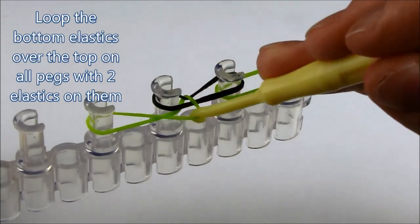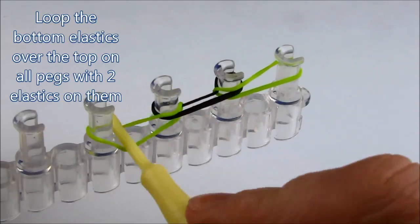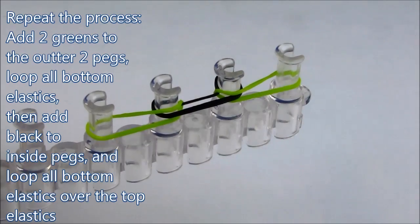Now loop the bottom elastics over the top elastics on any pegs that have more than 2 elastics on them. In this case pegs 2 and 3.